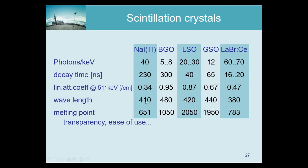The wavelength of emitted light matters for the photomultiplier or silicon photomultiplier used to detect scintillation photons; between 400 and 500 nanometers is the preferred range. The melting point is important for practical manufacturing reasons — sodium iodide is manageable, but LSO is extremely high at 2000 degrees Celsius, requiring significant research to find a material capable of holding molten LSO. BGO was the most popular scintillator for PET.